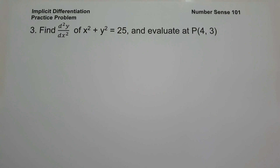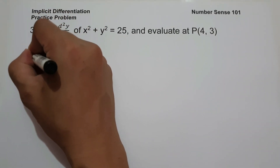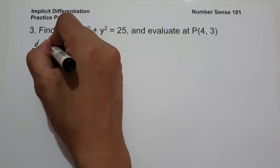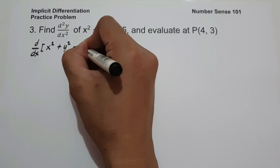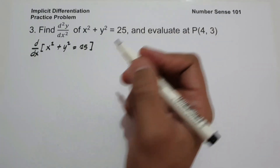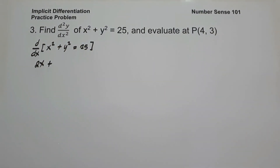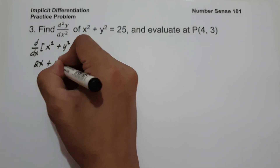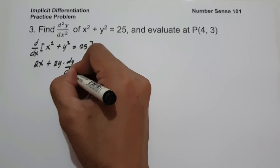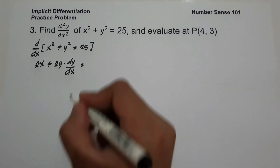On number 3, we are going to find the second derivative of x squared plus y squared equals 25, and evaluate at (4, 3). So how can we find d squared y over dx squared? The first step is to differentiate both sides: d over dx of x squared plus y squared equals 25. The derivative of x squared is 2x, the derivative of y squared is 2y associated with dy over dx, and the derivative of 25 is 0.